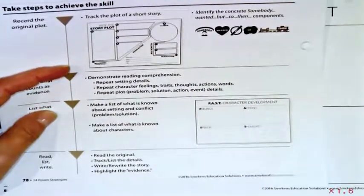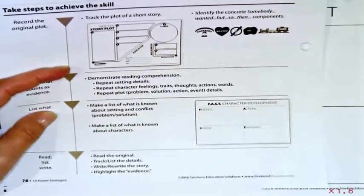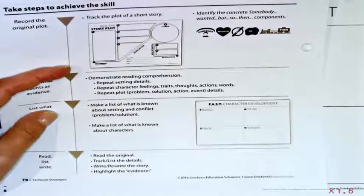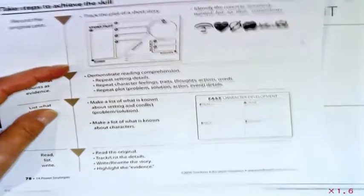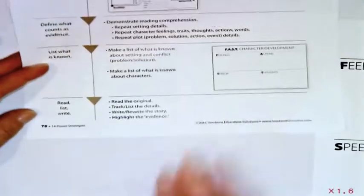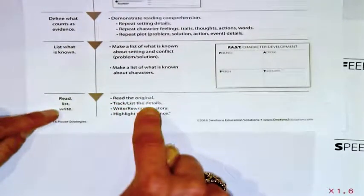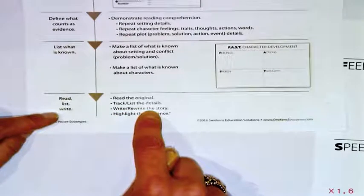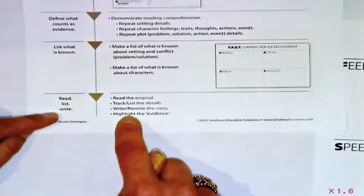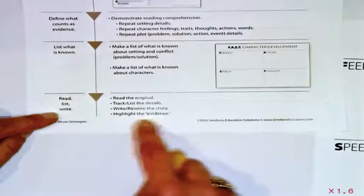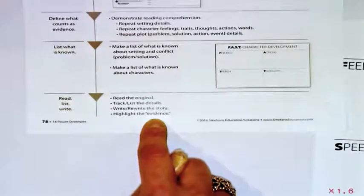What is known and then repeated is how you demonstrate comprehension. In fact, when we get to the point of actually writing our own narratives based on reading, I'll have kids read the text, track or list the details. They write their story. But before they turn it in, they highlight every repetitive detail. They highlight everything they repeated from the original text. And we say, that's evidence. Do you have a lot of highlights? Good job.